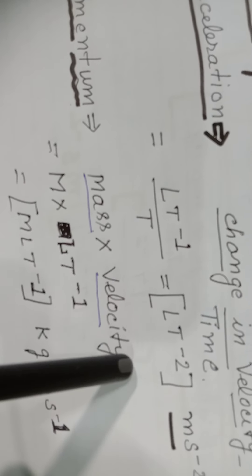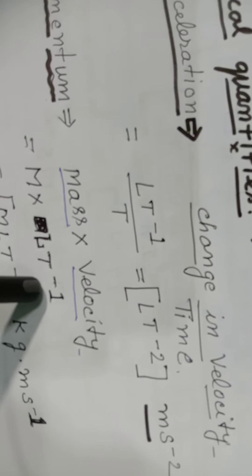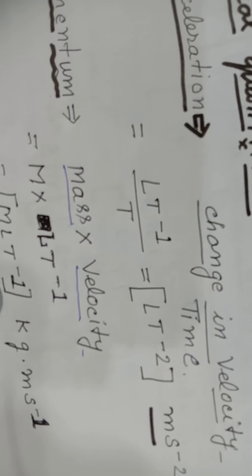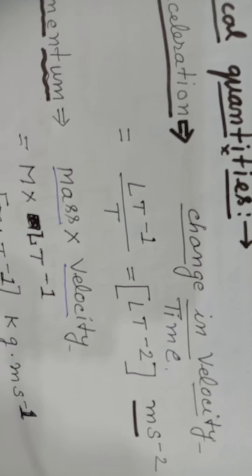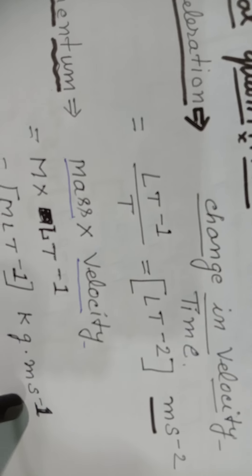Just like momentum: momentum equals mass into velocity. For mass we get dimension M, and for velocity we have [LT⁻¹], so momentum's dimension becomes [MLT⁻¹].